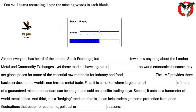First, it is a market where large or small quantities of metal of a guaranteed minimum standard can be bought and sold on specific trading days. Second, it acts as a barometer of world metal prices. And third, it is a hedging medium — that is, it can help traders get some protection from price fluctuations that occur for economic, political, or financial reasons.